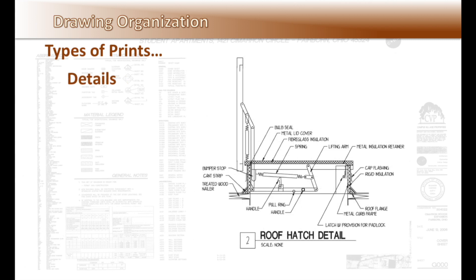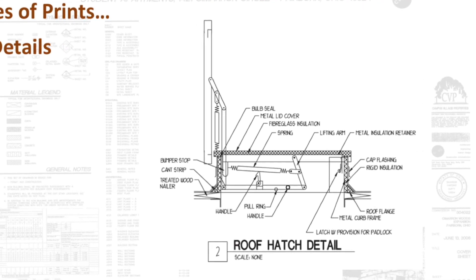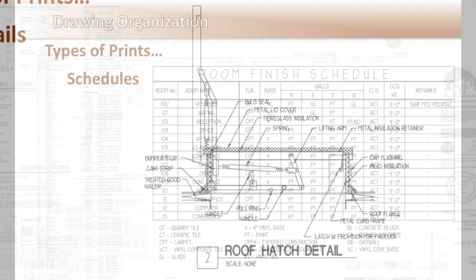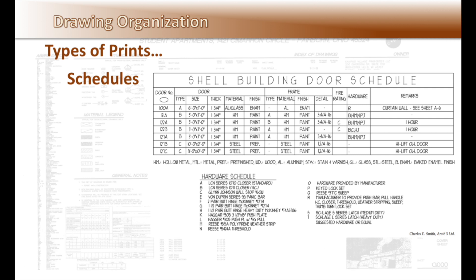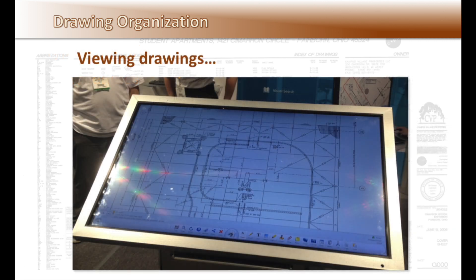As we look closer and closer into a detail, the building information becomes more and more detailed. Schedules are used to combine lots of information into one place for reference, as seen here in this room finish schedule, identifying each room in the building with a number and a name. This door schedule uses the room numbers from the finish schedule to identify each of the doors in the building. Schedules are used in all disciplines for gathering information. On large construction projects, these large sheet-sized touchscreens are used to keep track of the construction documents, changes to the drawings, and notes for the project.